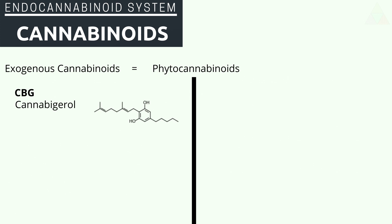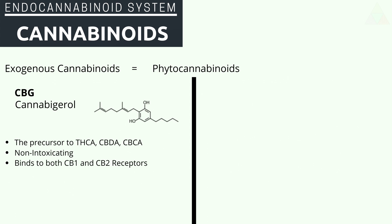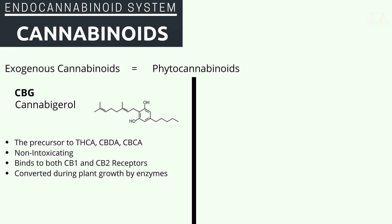Next, CBG, or cannabigerol. It is the direct precursor to THCA, CBDA, and CBCA. It is minorly intoxicating and binds to both the CB1 and CB2 receptors. It is converted during plant growth by enzymes to create THCA, CBDA, and CBCA. By itself it can slow bacteria growth and reduce inflammation.